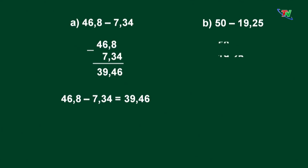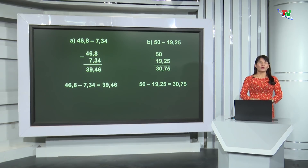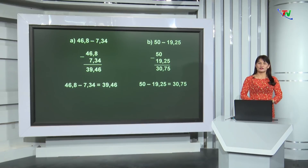B: Kết quả ý B bằng bao nhiêu các em? Các em chú ý, trong phép trừ này số bị trừ là số tự nhiên. Cho nên khi đặt tính, thì các chữ số ở cùng một hàng vẫn phải thẳng cột với nhau. Kết quả của phép trừ này là 30,75. Vậy 50 - 19,25 = 30,75. Vừa rồi cô đã giúp chúng mình ôn tập lại kỹ năng trừ 2 số thập phân. Bây giờ chúng mình hãy dành thời gian để chép lại nội dung ôn tập nhé.